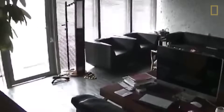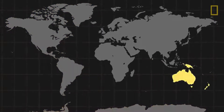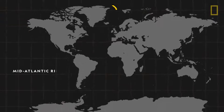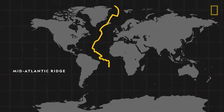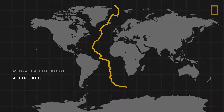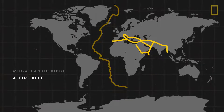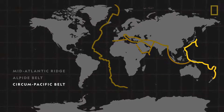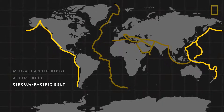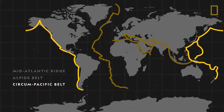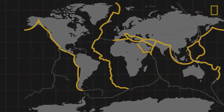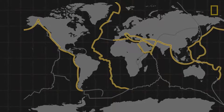Earthquakes occur around the world. They've been recorded on all seven continents, but most quakes take place in just three regions: the Mid-Atlantic Ridge, an underwater line that runs down the Atlantic Ocean; the Alpine Belt, which stretches from the Mediterranean to Southeast Asia; and the Circumpacific Belt, which traces along the edges of the Pacific Ocean and is where about 80% of all earthquakes occur. However, these areas experience the most earthquakes due to what lies beneath the surface.